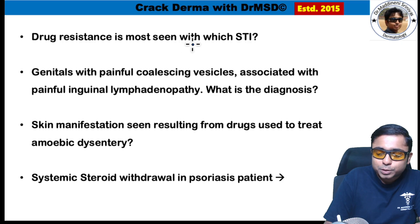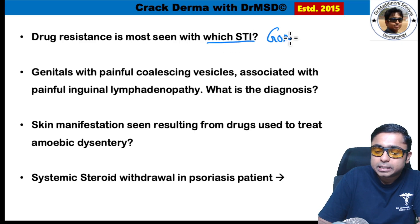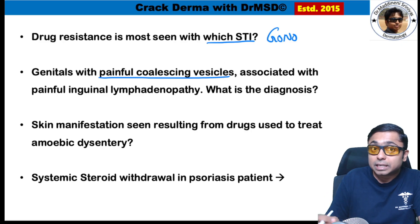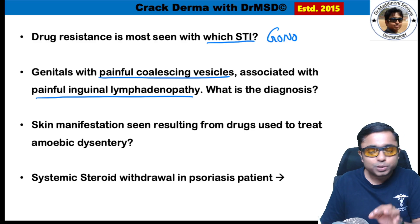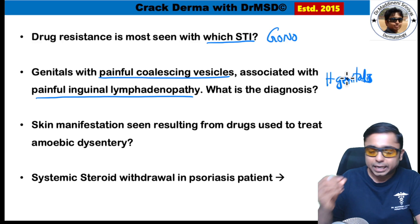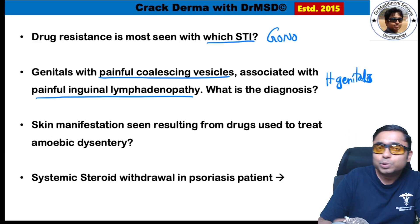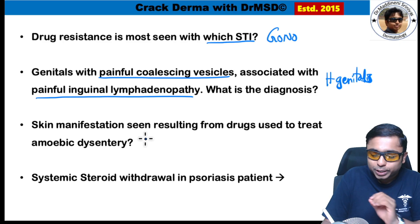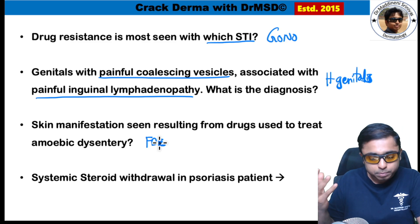Next, a few one-liners. Drug resistance is most commonly seen with gonorrhea among sexually transmitted infections. Genitals having painful coalescent vesicles, fluid-filled lesions, and painful inguinal lymphadenopathy — the diagnosis is herpes genitalis. Skin manifestation resulting from metronidazole, used to treat amoebic dysentery, is FDE — fixed drug eruption.